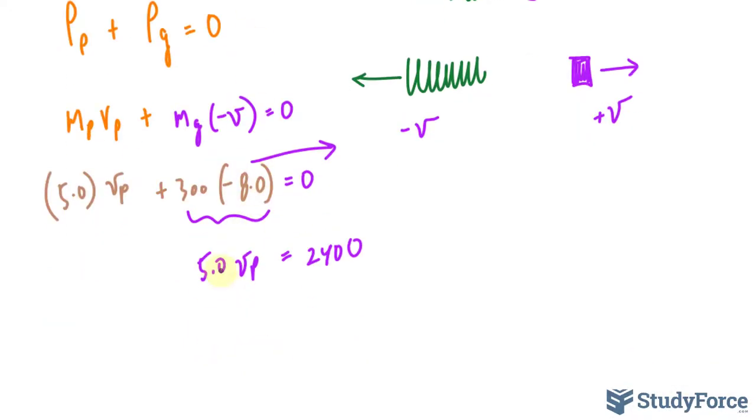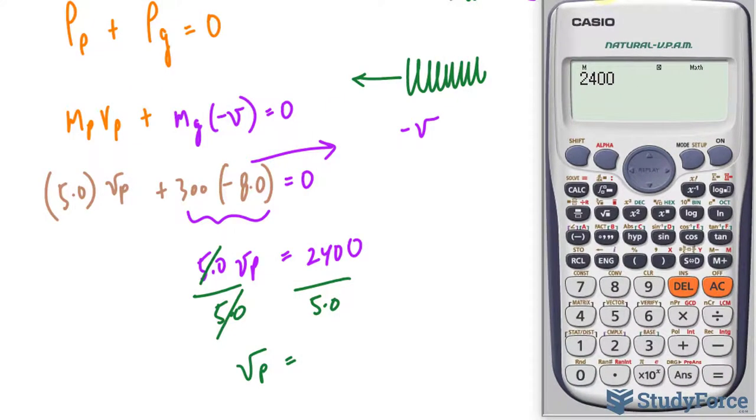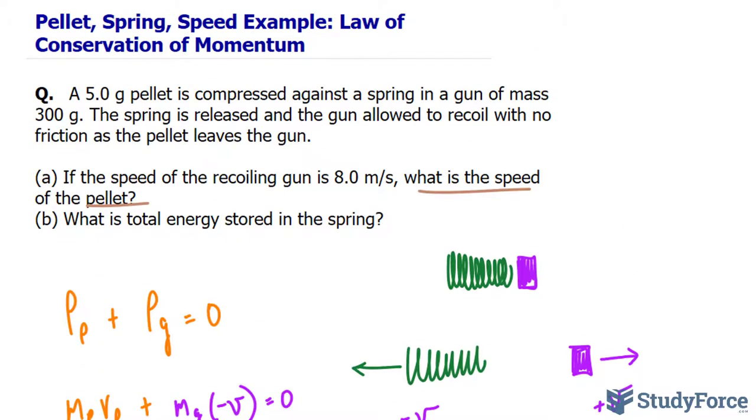Divide both sides by 5.0 to isolate for V sub P. So 2,400, using our calculator, divided by 5 makes 480 meters per second. And that is really fast. So that's the answer for A.